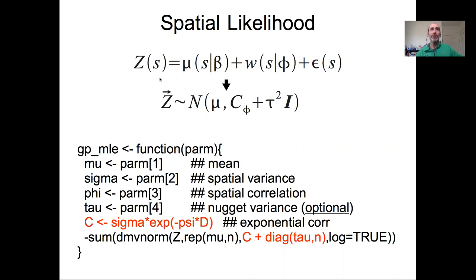In the previous conceptual lecture we talked about how we could break down a spatial model: the predicted response variable z at some location x is a function of the process model's predictions at that location given some parameters, plus a spatial error component, plus a non-spatial residual error component otherwise known as the nugget. We can rewrite that general spatial model more specifically by saying the vector of our predicted z's follows a multivariate normal distribution with the mean coming from our process model — that could be as simple as a constant mean, a linear model, or a nonlinear model — and we take these two components, spatial covariance and the residual error, and combine them into our overall covariance matrix.